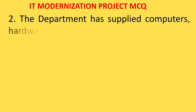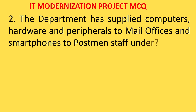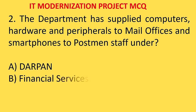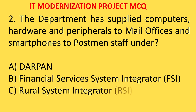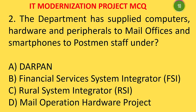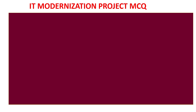This project was implemented starting in 2012 and completed by 2015 - remember this point. MCQ 2: The department supplied computers, hardware, and peripherals to mail offices and smartphones to postman under which silo - FSI, RSI, or mail operations hardware? The answer is mail operations hardware (MOH). Through MOH, computer peripherals, printers, and other hardware were supplied to RMS units and mail offices, and the smartphones provided to postmen for PMA were also procured under this silo.